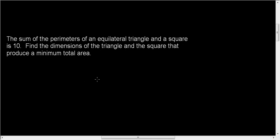In this video we're continuing with optimization. The sum of the perimeters of an equilateral triangle and a square is 10. Find the dimensions of the triangle and the square that produce a minimum total area.